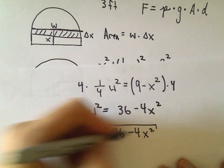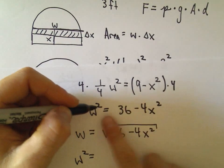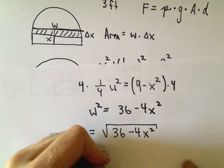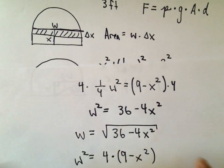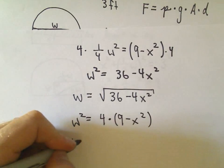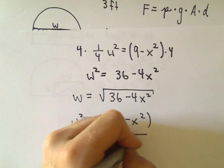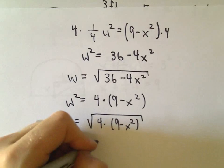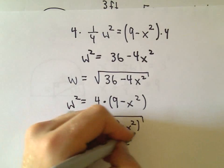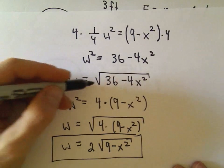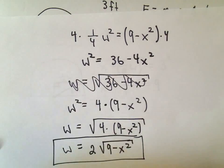Actually, instead of distributing, let's leave w squared as 4 times (9 minus x squared), so when I take the square root of both sides I get a cleaner expression. The square root of 4 is just 2, so w equals 2 times the square root of 9 minus x squared. The other form would have been fine, but we would have had to factor it back out anyway.